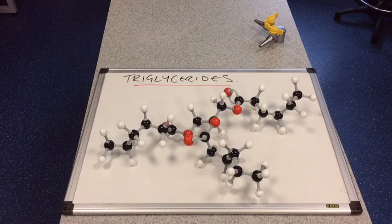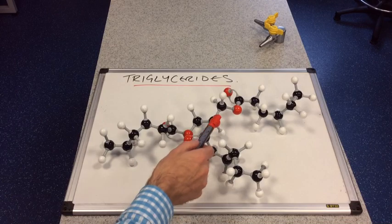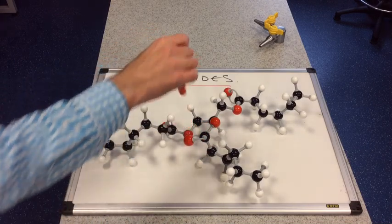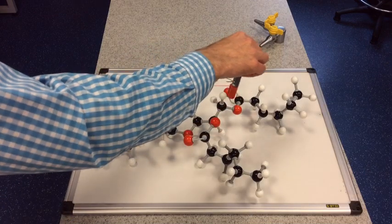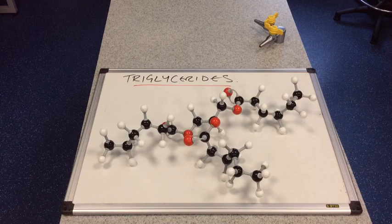So the first thing to point out is this is actually an ester. So hopefully you can see there's an ester group there. There's an ester group there. And there's an ester group there. Because there are three ester groups in this molecule it's called a triester.